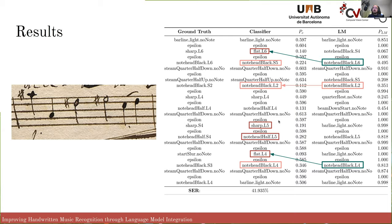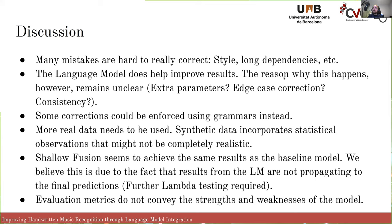Overall, there are many mistakes which are very hard to correct because they are based on style, and we also have problems with long dependencies in the sequence. The language model is helping improve results, however the extent to which improvement can be attributed to the language model versus simply the increase in parameters is uncertain. Some corrections can be enforced using grammar instead, but we need to regularize the output language. And ultimately, with only 200 samples, there is only so far we can go. Finally, the evaluation metrics employed don't really convey the strengths and weaknesses of the model — I make an open call to increase the use of more musically aware metrics to better compare model strengths.